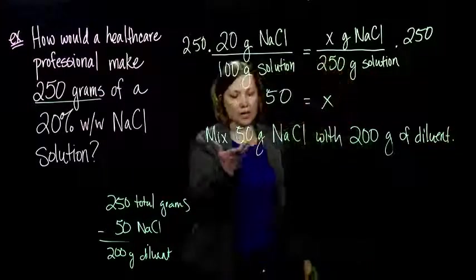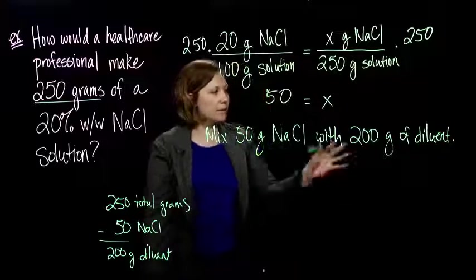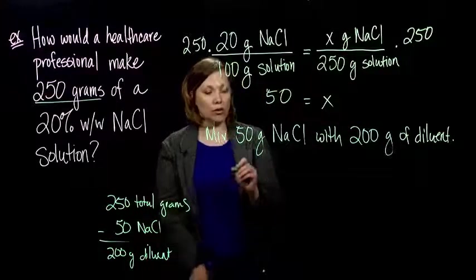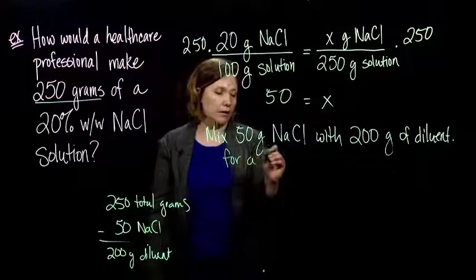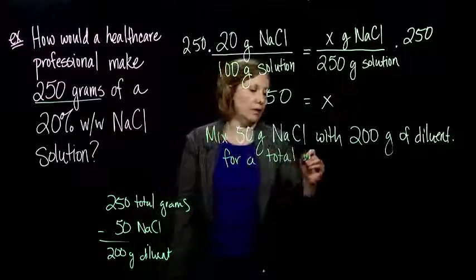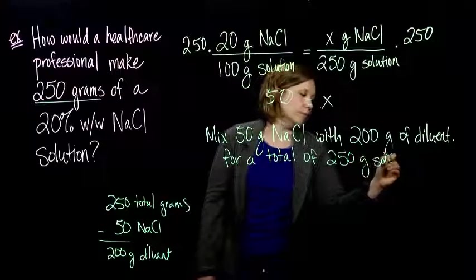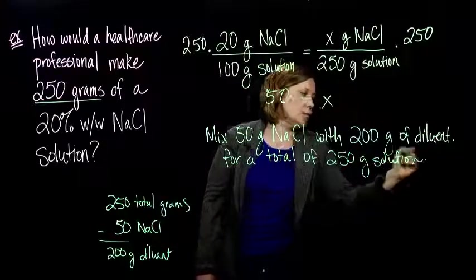And there you have it. You take 50 grams of sodium chloride and mix it with 200 grams of diluent to give a total of 250 grams sodium chloride solution.